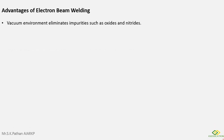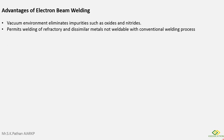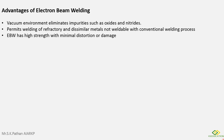Advantages of electron beam welding: First, the vacuum environment eliminates impurities such as oxides and nitrides. Second, it permits welding of refractory and dissimilar metals that are not weldable with conventional welding processes. Third, electron beam welding produces high strength welds with minimal distortion or damage.